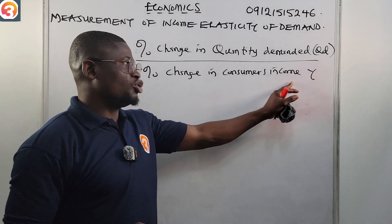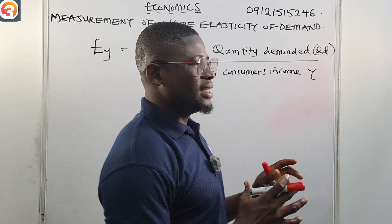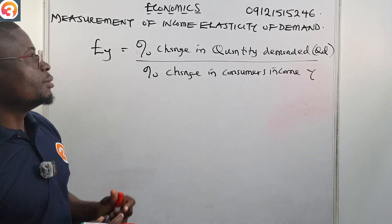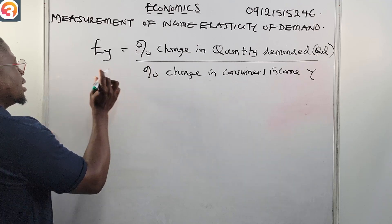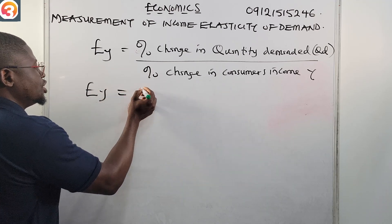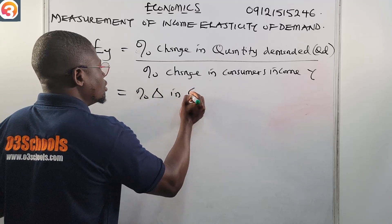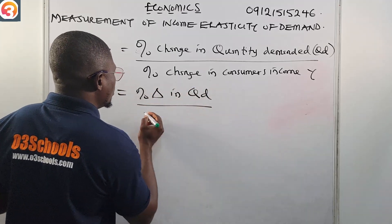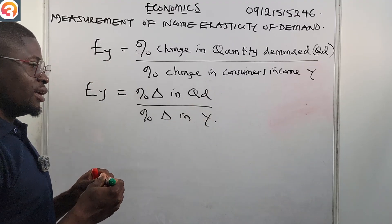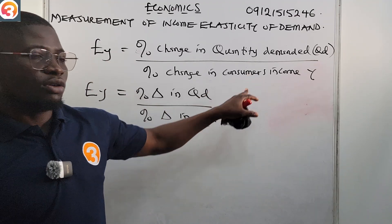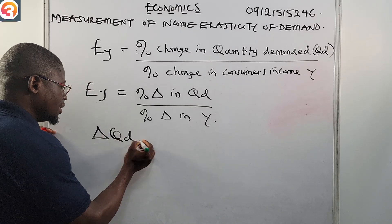Here QD represents quantity demanded and Y represents the income of the consumer. So this is the formula used in calculating — or measuring — income elasticity of demand. EY equals percentage change in QD over percentage change in Y, where Y is our consumer's income.